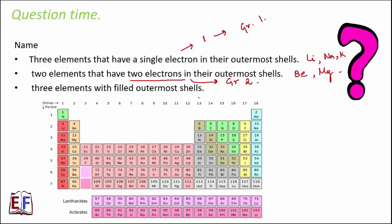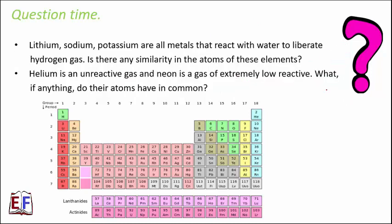Name three elements with filled outermost shells. Filled means you need eight electrons in the outermost shell — the only exception is helium, which has two electrons. So you can pick any element from group 18: neon, helium, argon, or krypton all have filled outermost shells.